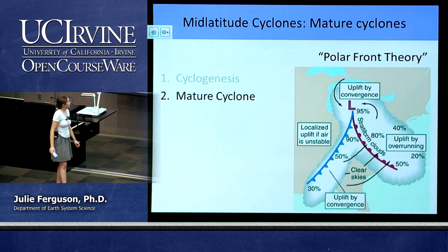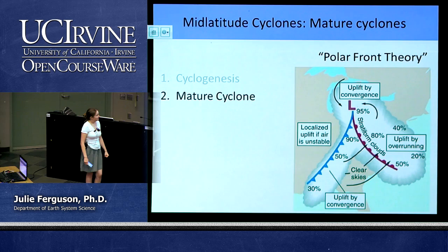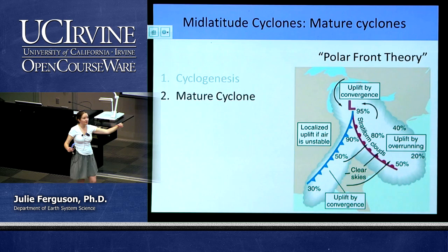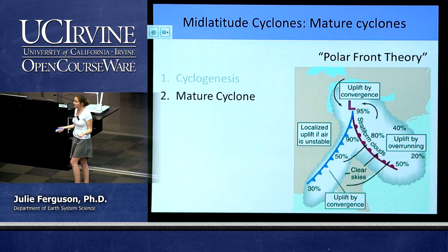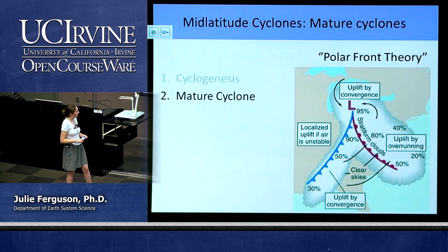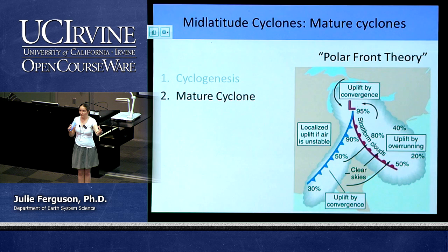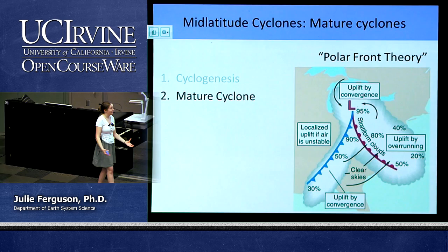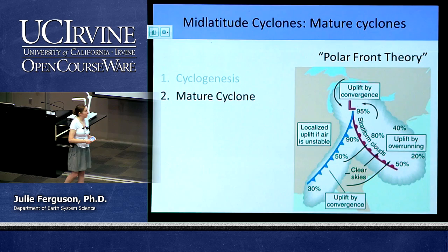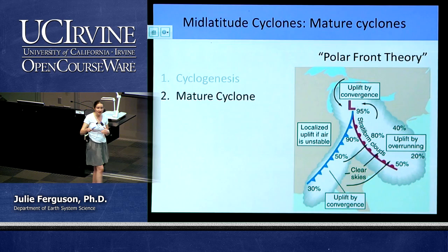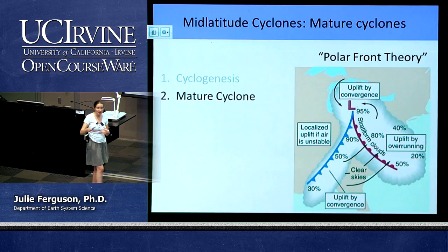Here's our fully developed mid-latitude cyclone. Along the cold front we have a relatively narrow band of clouds and precipitation. The percentages shown indicate the likelihood of rainfall in each area. Toward the low in the center, there is more and more likelihood of rain because of lifting by convergence at that central point. We also have frontal lifting along the fronts, and on the other side of the warm front we have a much shallower boundary in the atmosphere, so we get a thicker band of potential rainfall and clouds.